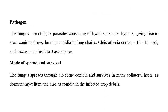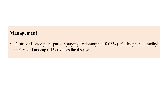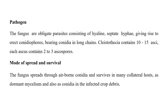Coming to the pathogen, powdery mildew produces a cleistothecia type structure where asci are packed inside. It consists of 10 to 15 asci, each containing 2 to 3 ascospores. The mode of spread is mainly airborne conidia, and the pathogen survives in collateral hosts.